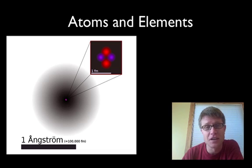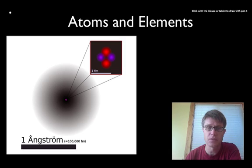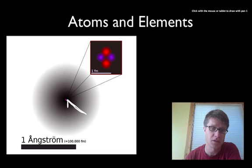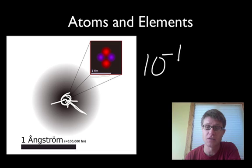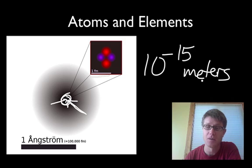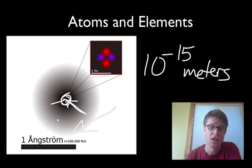Hi, this is Mr. Andersen and today I'm going to be talking about atoms and elements. This here is a picture of helium, and if we look at helium right here, you know that this is the nucleus here in the center. To give you an idea of scale, the nucleus, which is this tiny bit right down here, is actually measured in femtometers — that is 10 to the negative 15th meters. In other words, this is really small. But atoms are incredibly small.